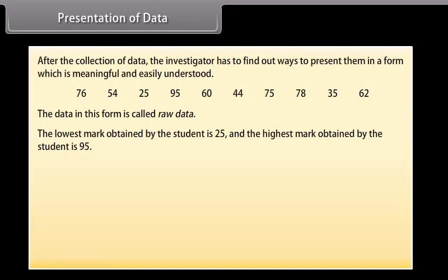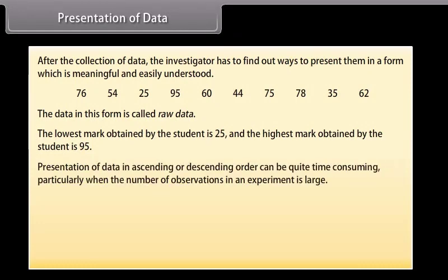If we write these numbers in ascending or descending order then it would be easy for us to see the highest or the lowest marks. Presentation of data in ascending or descending order can be quite time consuming, particularly when the number of observations in an experiment is large. So this is the ascending order. Now we can clearly see that the lowest marks are 25 and the highest marks are 95.